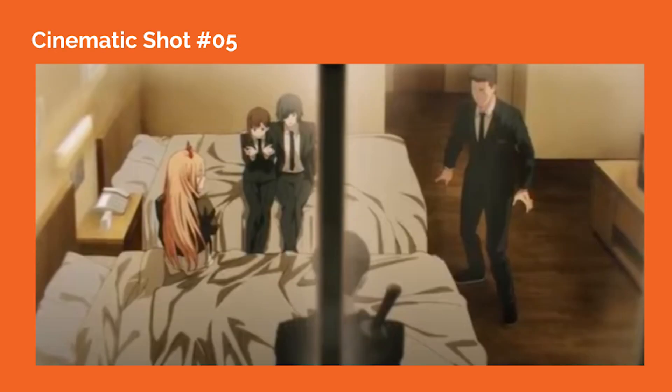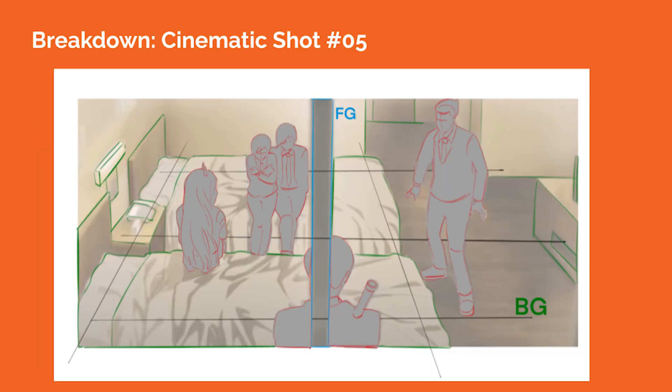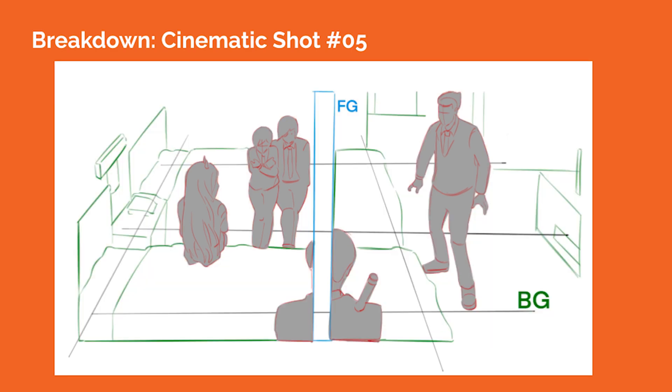In cinematic shot number five, the camera is placed high above the characters and is staged outside the room window, shooting into the room with this down shot. The perspective cues indicated by the furniture in the room help us to see the ground plane. This foreground element also helps to separate the characters inside the room in different visual spaces. The grid of the window in the foreground is blurred out of focus.